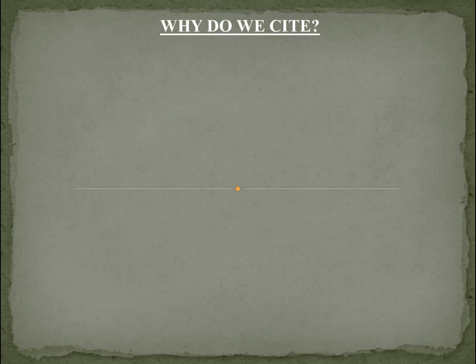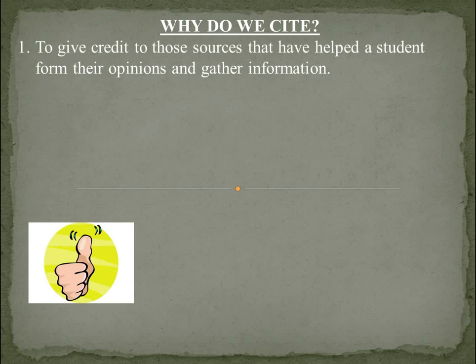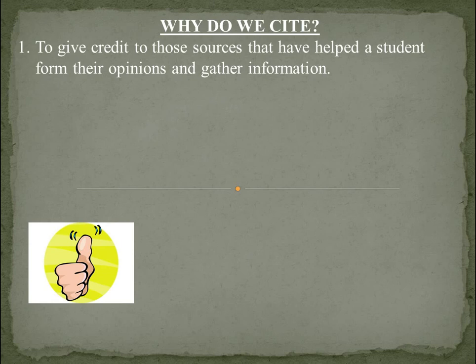Students often get annoyed with citations and don't fully understand why we have to cite. Here are the best reasons why citing is important. The first is to give credit to sources that have helped the student form their opinions and gather information. This is you acknowledging and giving respect to sources that have helped you write your paper. Just like when a movie star gets up to receive the Academy Award and thanks people, saying this couldn't be done without this person — that's what a student needs to do: recognize and thank those sources that helped create the paper.